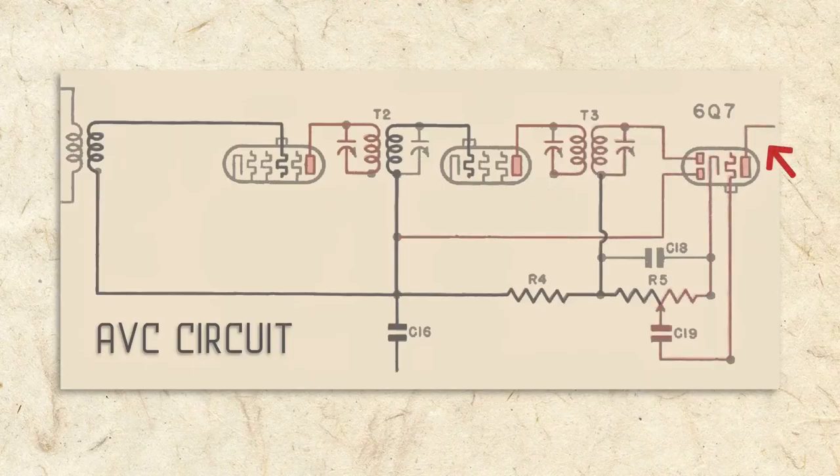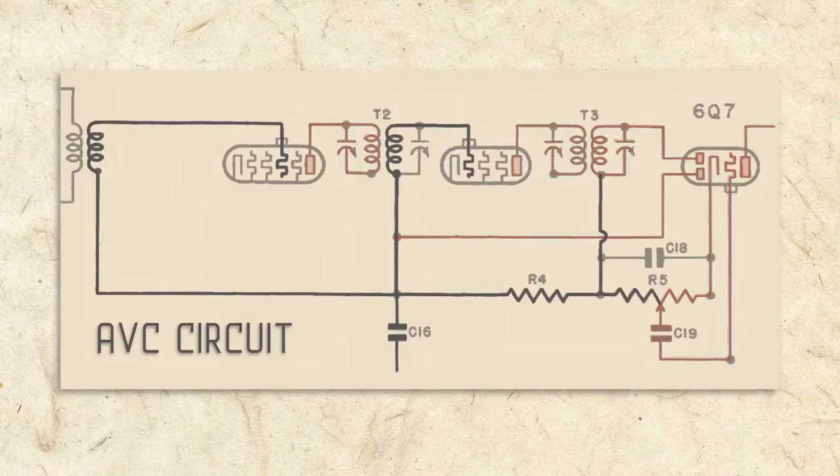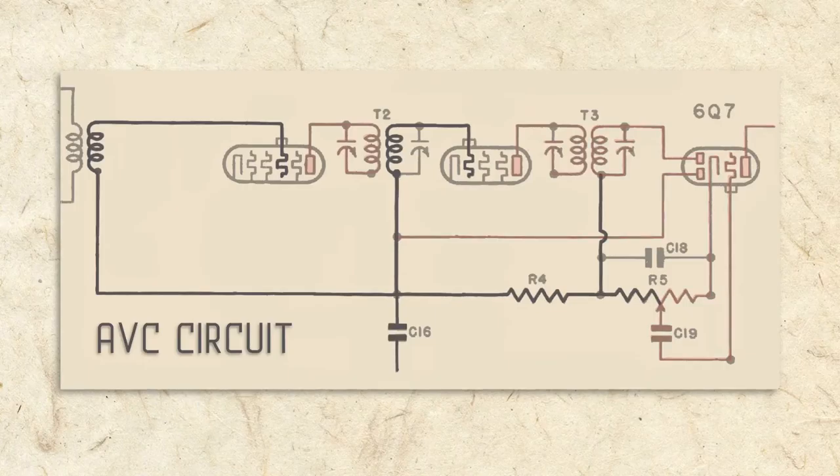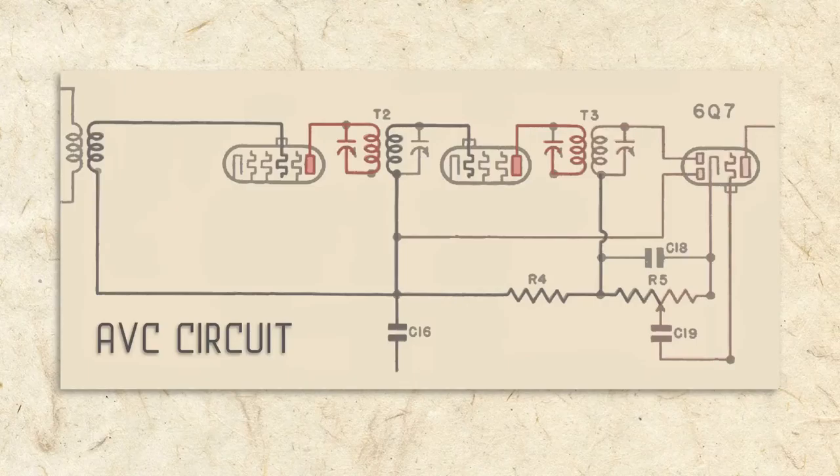So when the volume gets too high, AVC voltage increases, causing tube current and volume to go back down. When volume gets too low, AVC voltage is reduced, current flow increases, and volume goes back up.